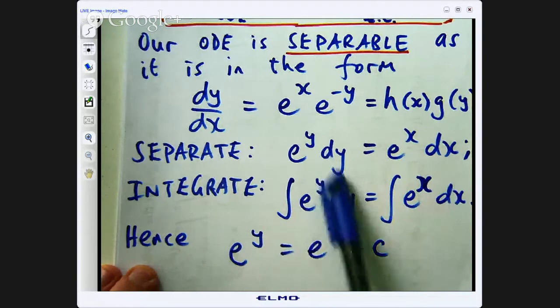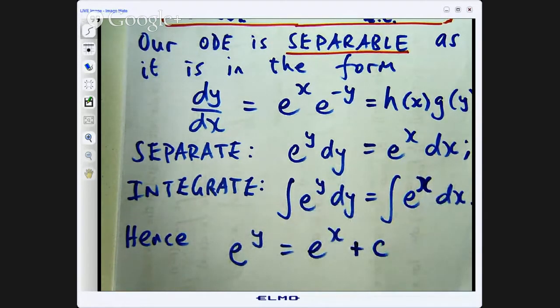Now, I could put a constant over this side and a constant over this side. One constant is enough. If you are really concerned about that, you can put two constants in but it is not necessary. One constant is enough.